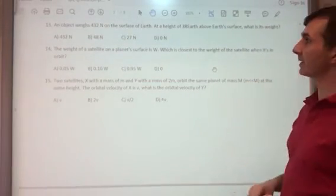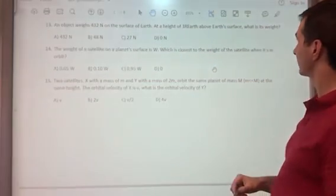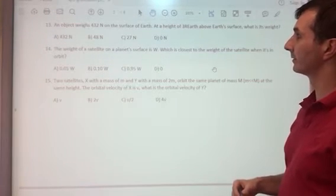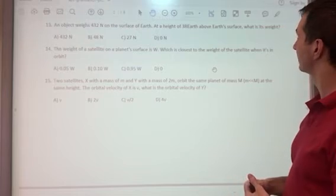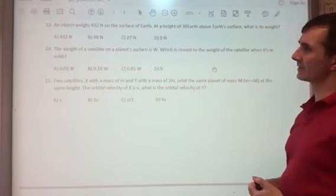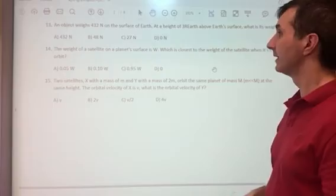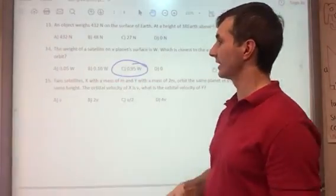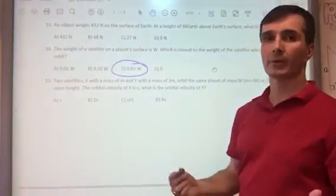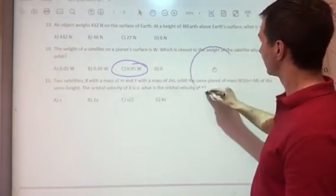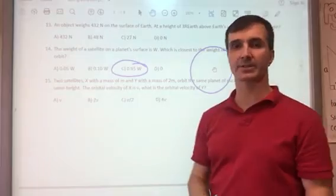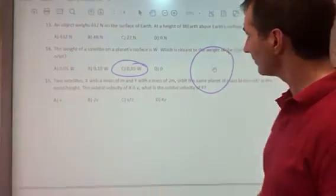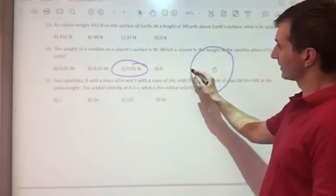The weight of a satellite on a planet's surface is W. Which is closest to the weight of the satellite when it's in orbit? This is a pretty poor question. I'm thinking they're going for C, just for this reason: we tend to think of satellite orbits as being super far away.